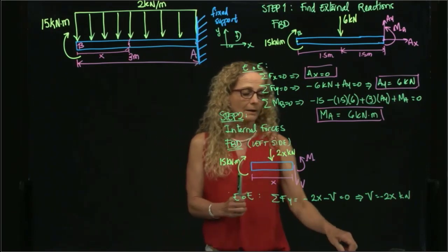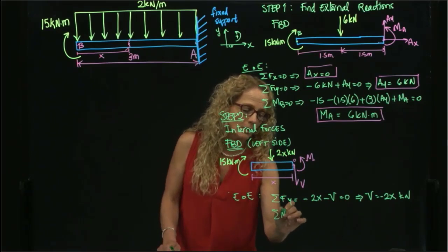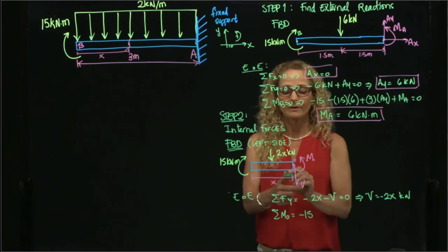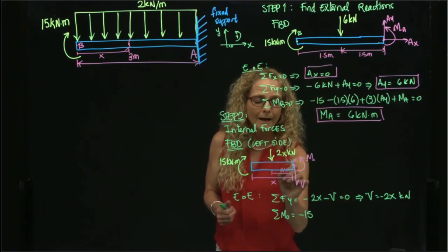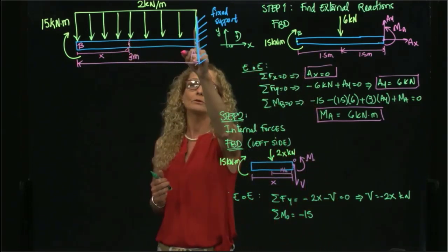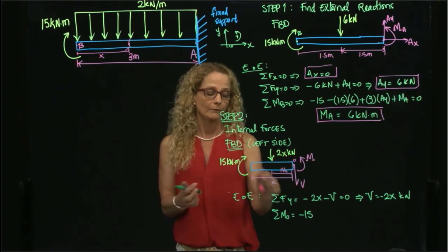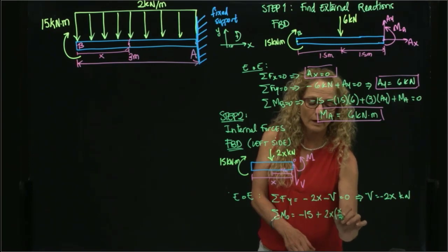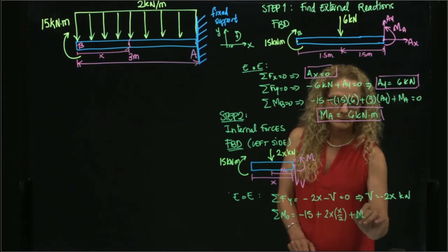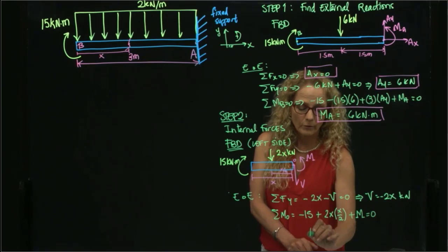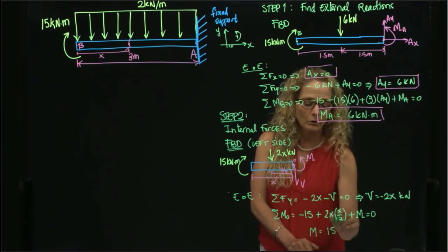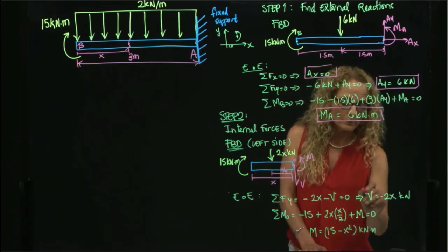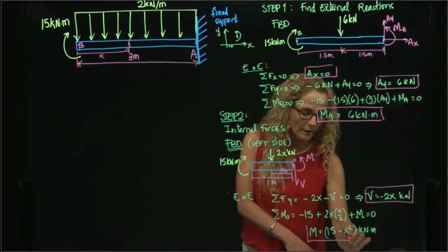Taking moment at the cut point O: I have negative 15 kilonewton meters, then the moment of the distributed load resultant. This force is located at x/2 because the distributed load is constant, so it acts at the midpoint. Therefore I have a positive moment of 2x times x/2, plus the internal bending moment M, equals 0. Solving for M: M equals 15 minus x² kilonewton meters. I now have expressions for both shear force and moment.